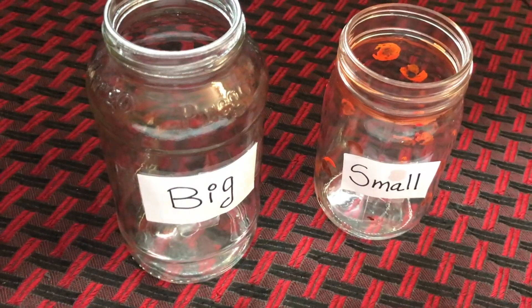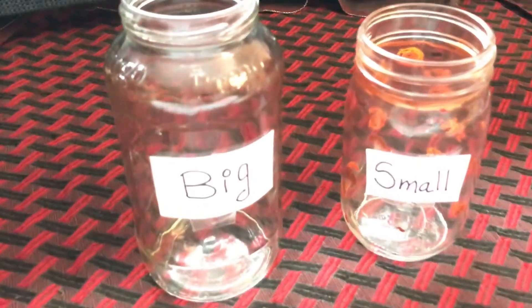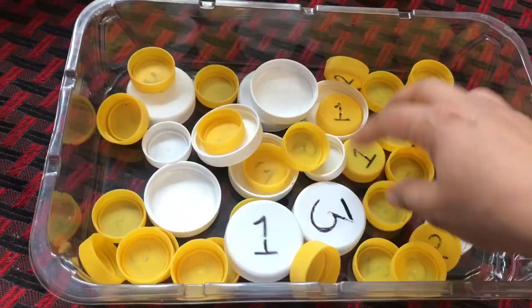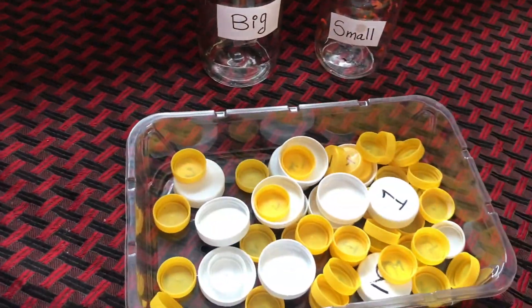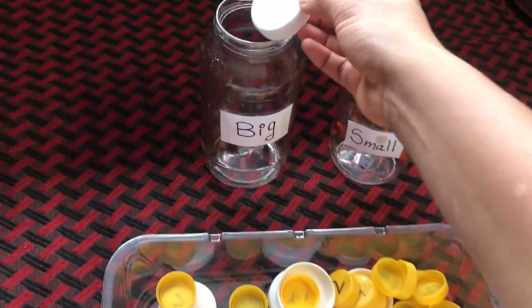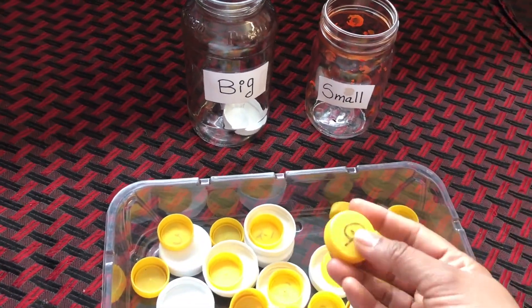For performing this exercise we need objects with different sizes. Parents, here you can give any object which is small and big, and ask the learners to sort the objects according to the sizes.